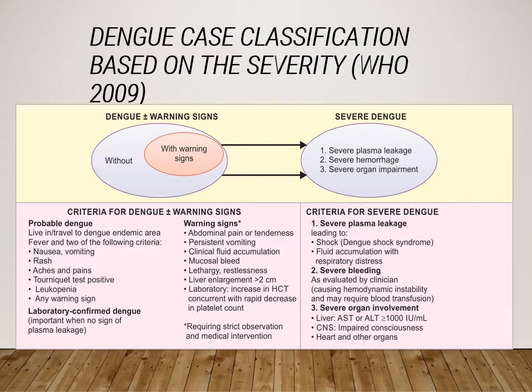'Severe dengue' is defined by plasma leakage leading to shock, severe bleeding, or organ impairment. This includes ARDS (acute respiratory distress syndrome), severe bleeding, or organ involvement.